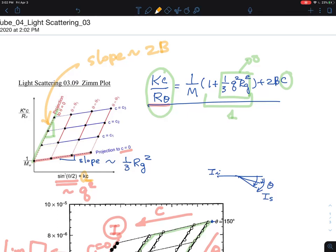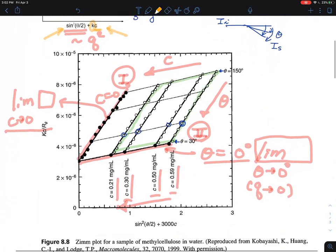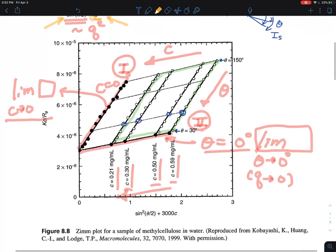I cannot explain you the details of how the Zimm plot is being made, but you can see that from the angle, they can calculate the Q. Q, remember, 4πN over lambda naught sine theta over 2. I think I spent the time to explain that to you. And then the concentration. So these are the two terms, but they are putting in one Q squared term and concentration term, and that's how they put it in here.